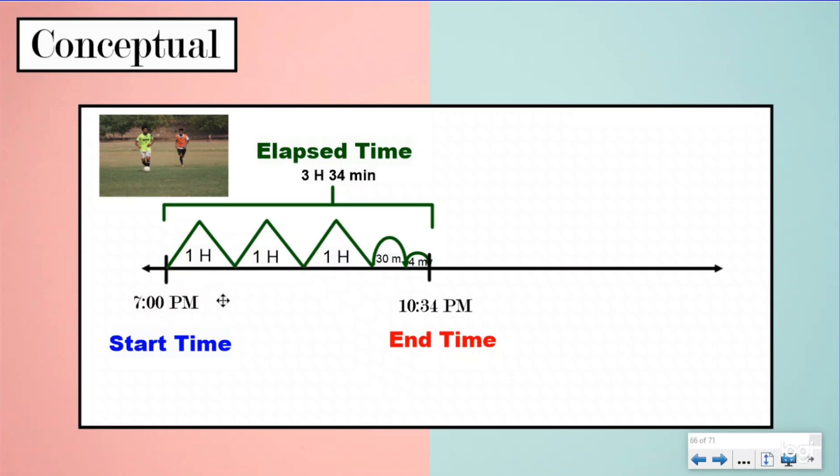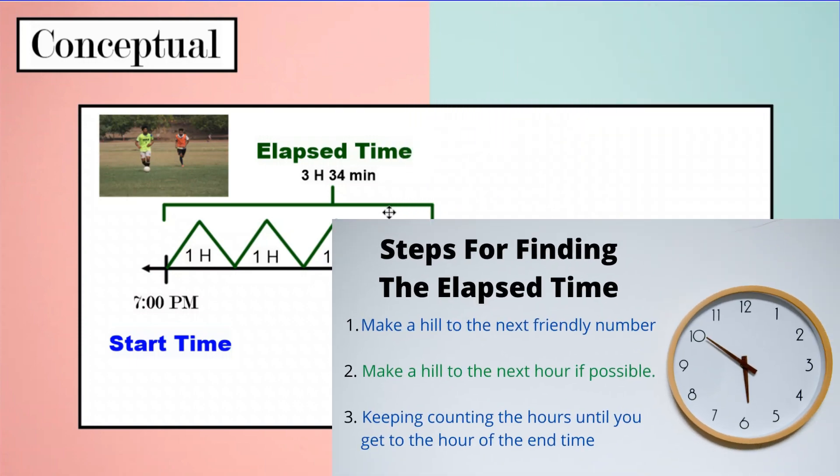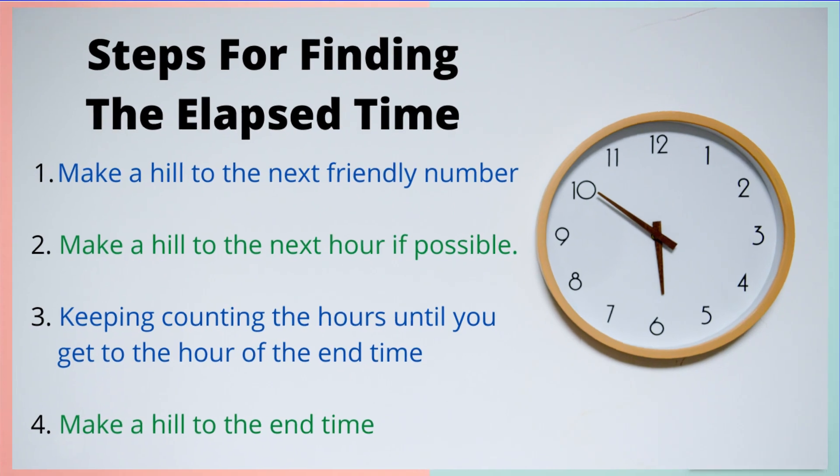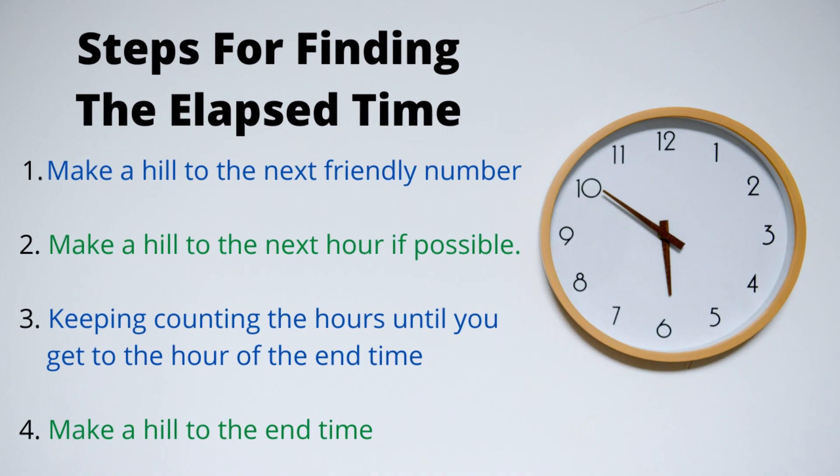Today, we're going to be giving you the start time and the end time, and you're trying to find the amount of time in between those. If you've done the third grade lesson with us, you'll already know these steps, but here are our steps for finding the elapsed time. Our steps that we're going to be using today to find our elapsed time is when you have the start time, you want to go to the first friendly number. Our first multiple of 10.